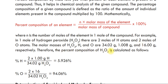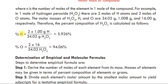Therefore, the percent composition of hydrogen peroxide is calculated as follows. The hydrogen percentage is n times the molar mass of hydrogen divided by the molar mass of hydrogen peroxide, which gives approximately 6%. So with hydrogen peroxide, the hydrogen percentage is 6%.